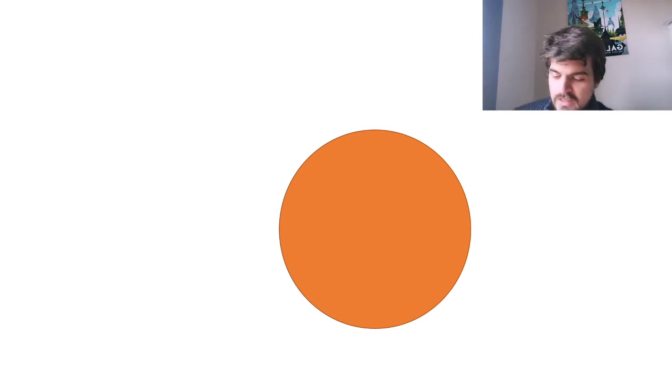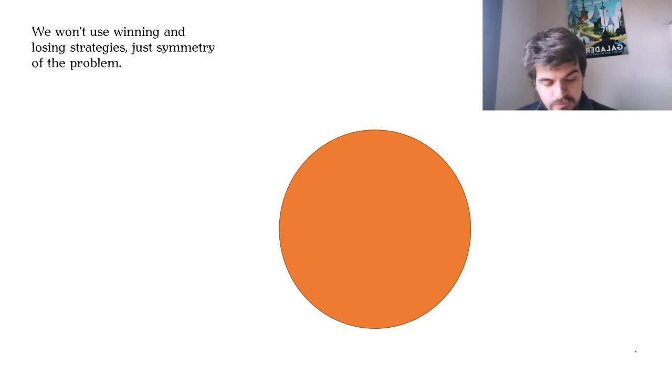Hi everybody, it's Jakub again and this is the second example from the games problem set. We won't use winning and losing strategies for this problem because this is a different one. This is a symmetry problem.